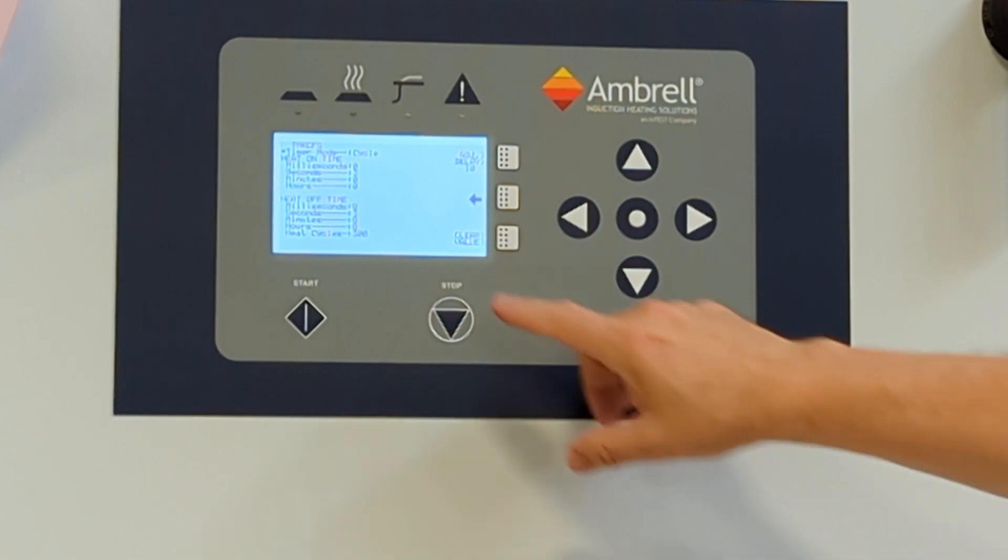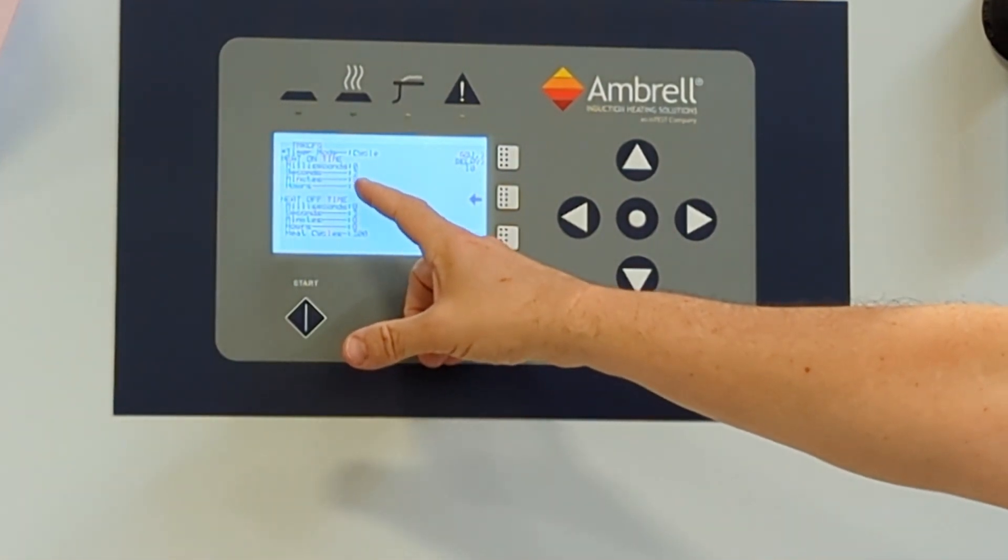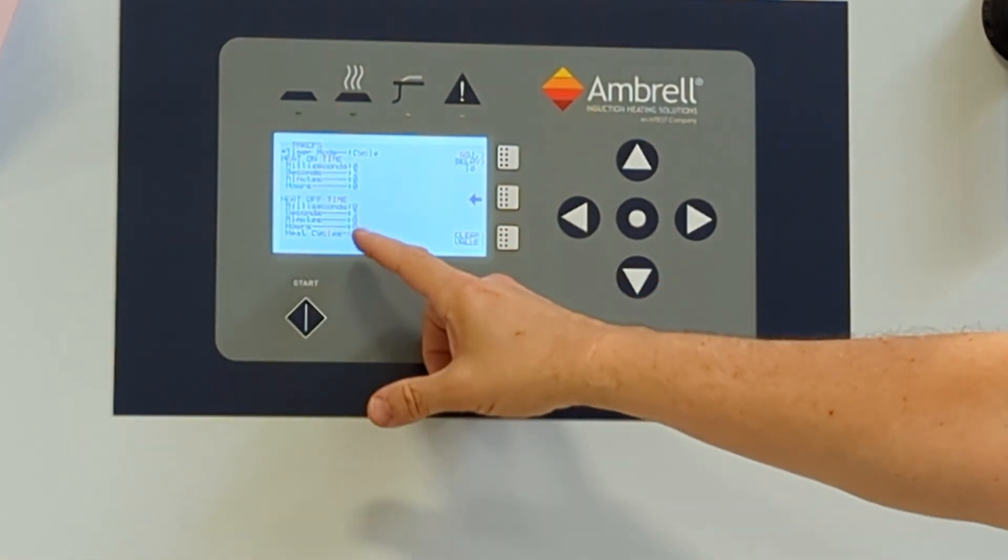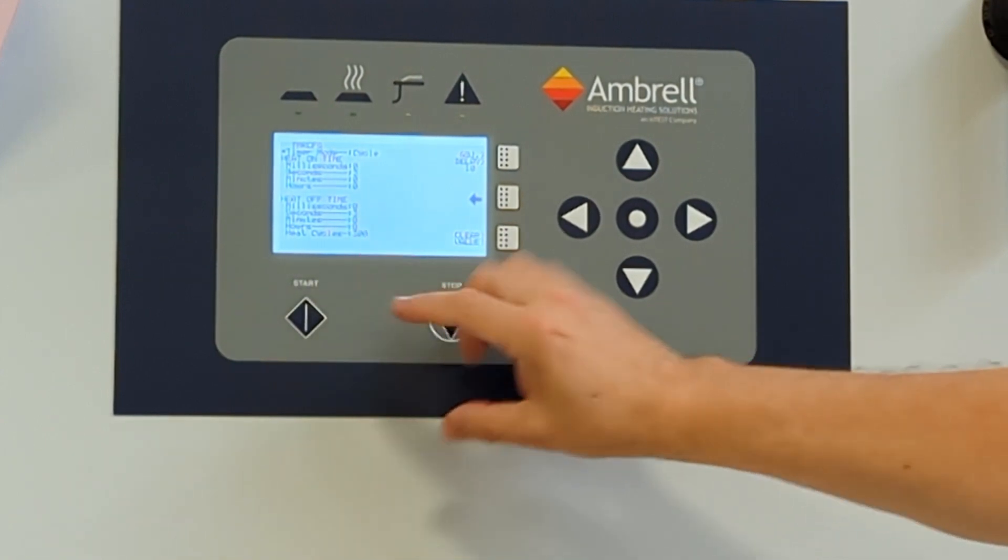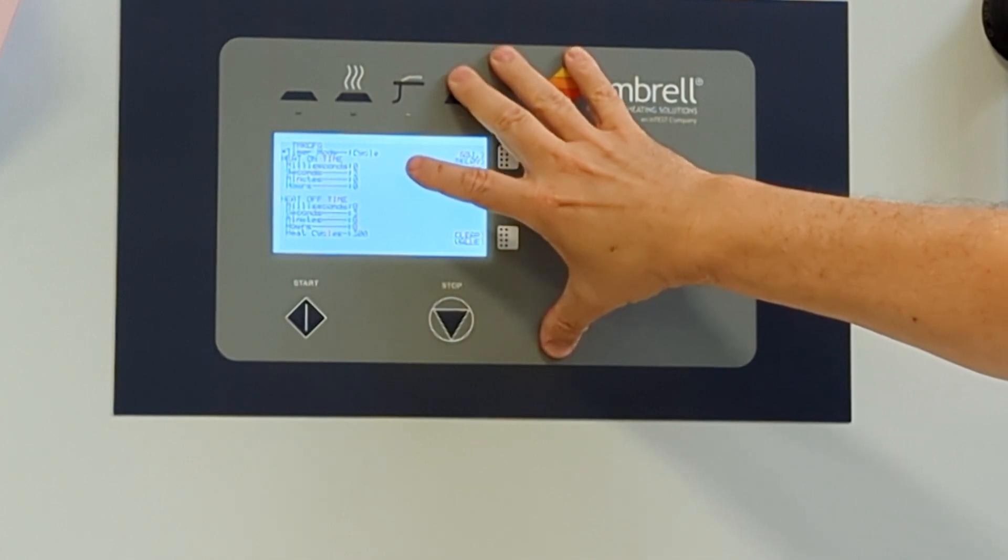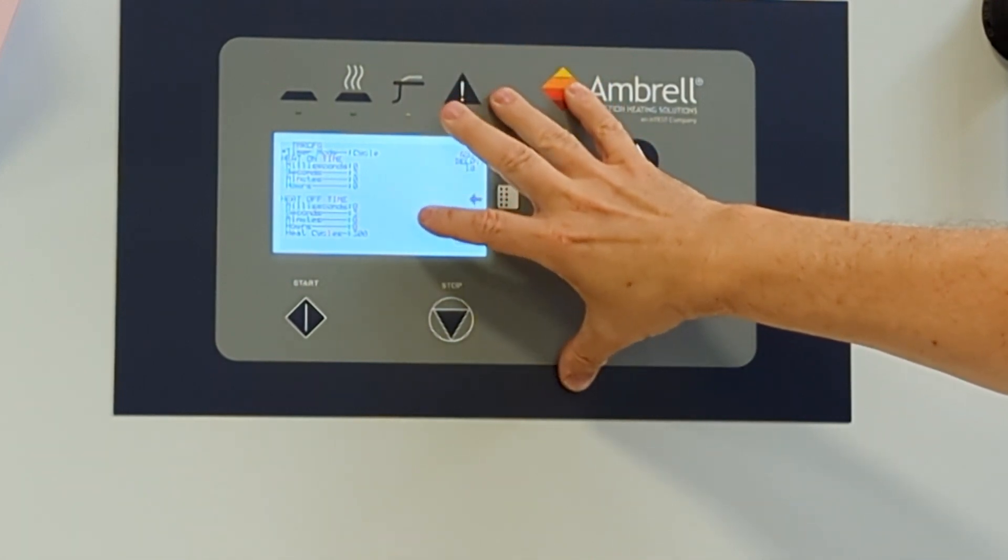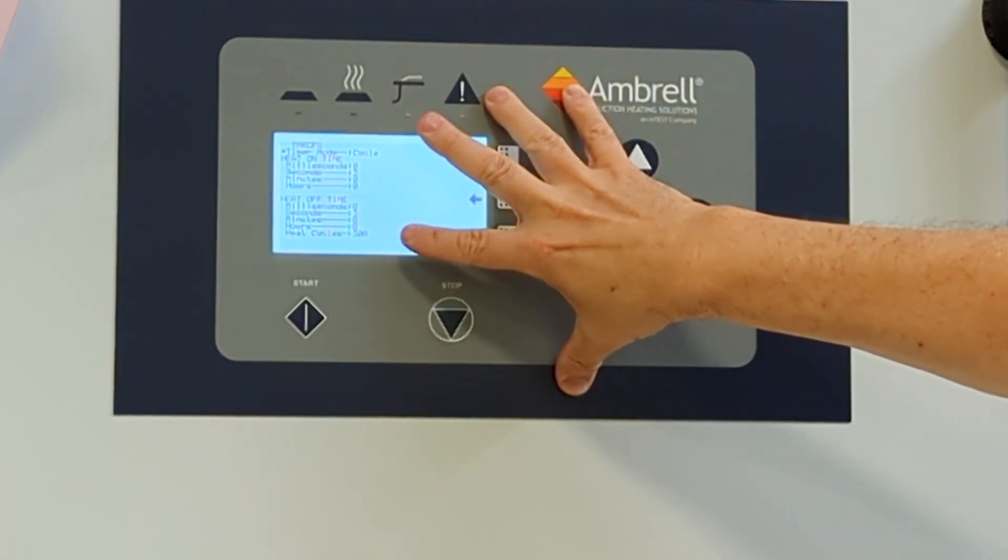Finally, we have cycle mode. In cycle mode, the machine will turn on for a preset period, turn off for a preset period, and will cycle. In this case, the machine will turn on for three seconds, turn off for three seconds, and it will repeat 300 times.